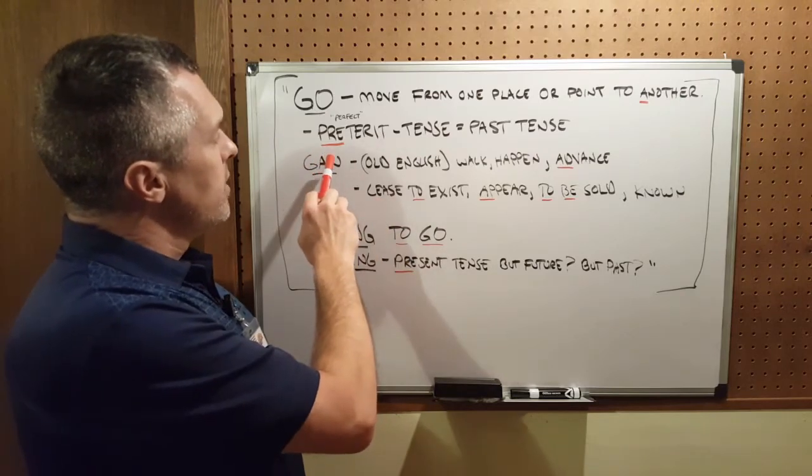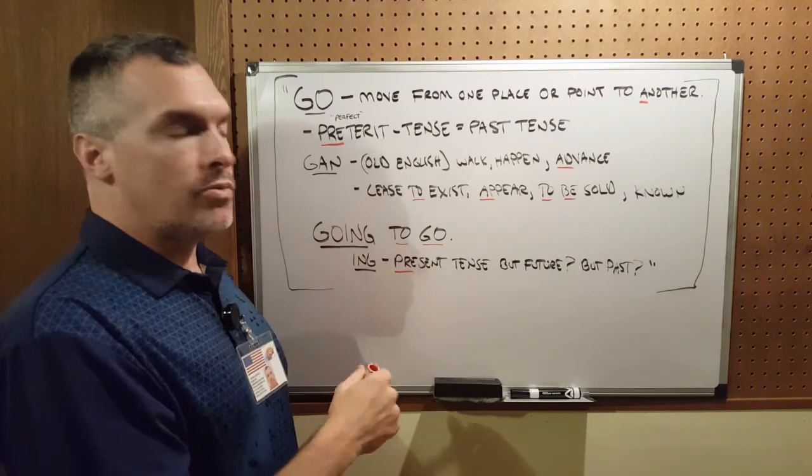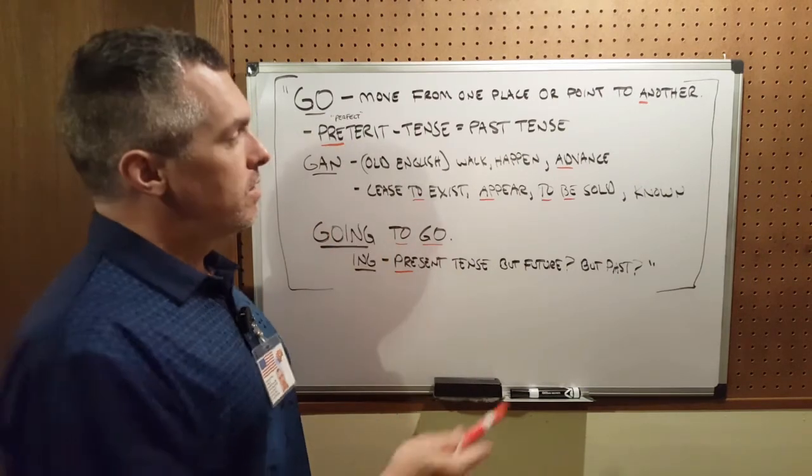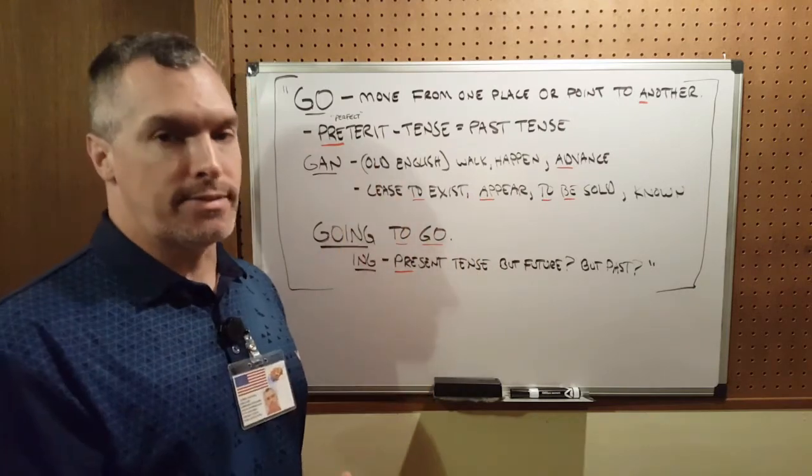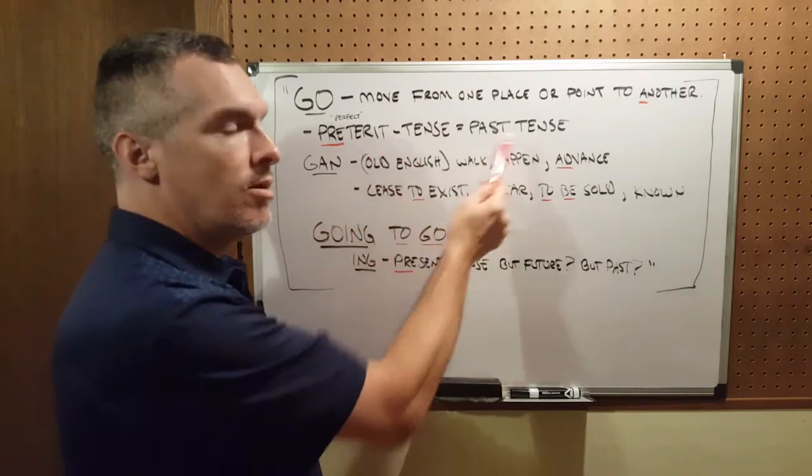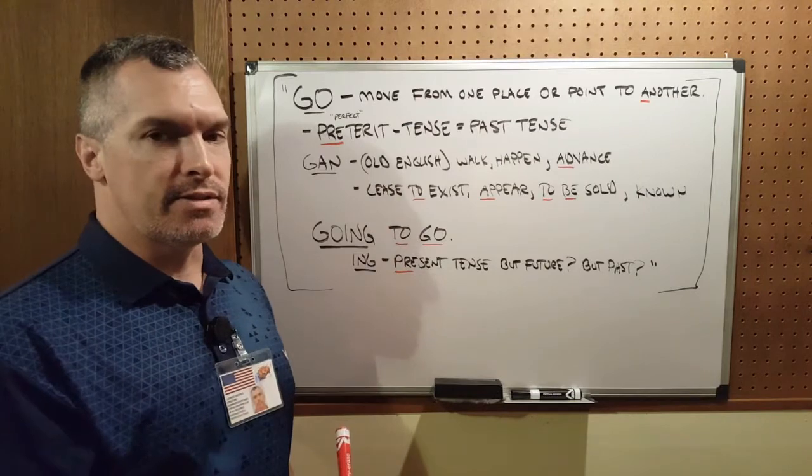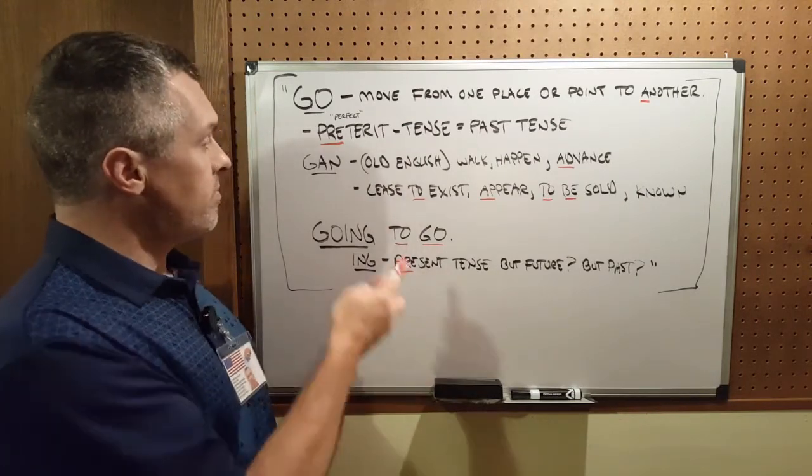Go is preterit tense, which when you look this up in Webster's Dictionary, 1828, it clearly says preterit is past. So go is preterit tense, i.e. past tense. They also say it's perfect tense, and that's definitely a misnomer, as you will see.